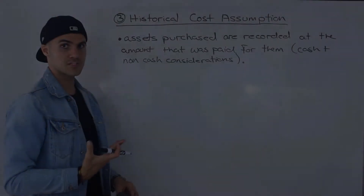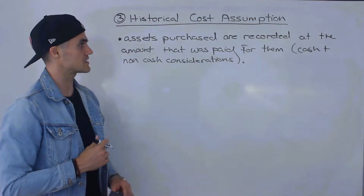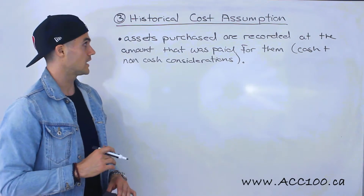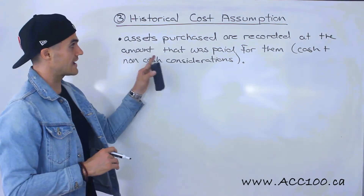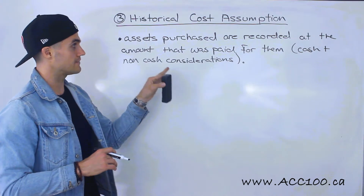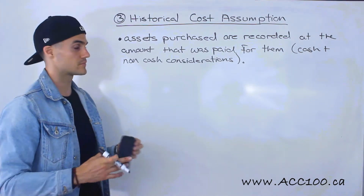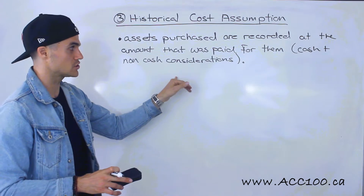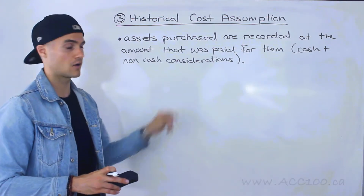Moving on to the third assumption: the historical cost assumption. This is a big one. It basically assumes that assets purchased are recorded at the amount that was paid for them, whether that's for cash or non-cash considerations or a mix of both.